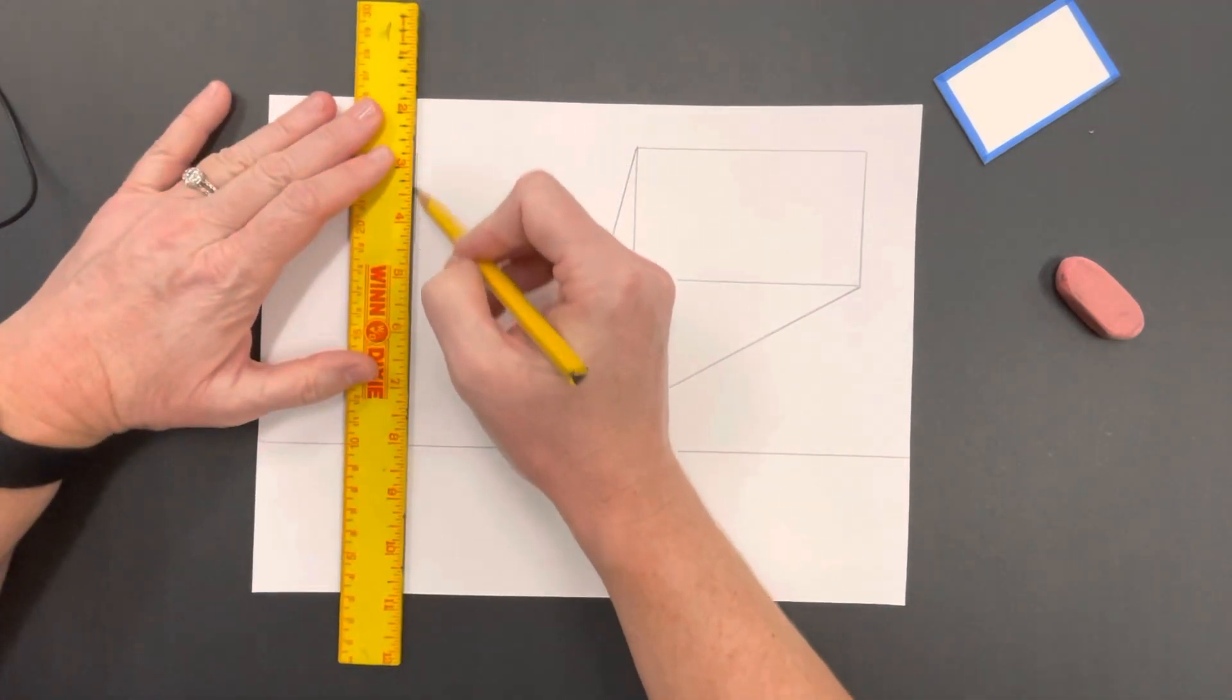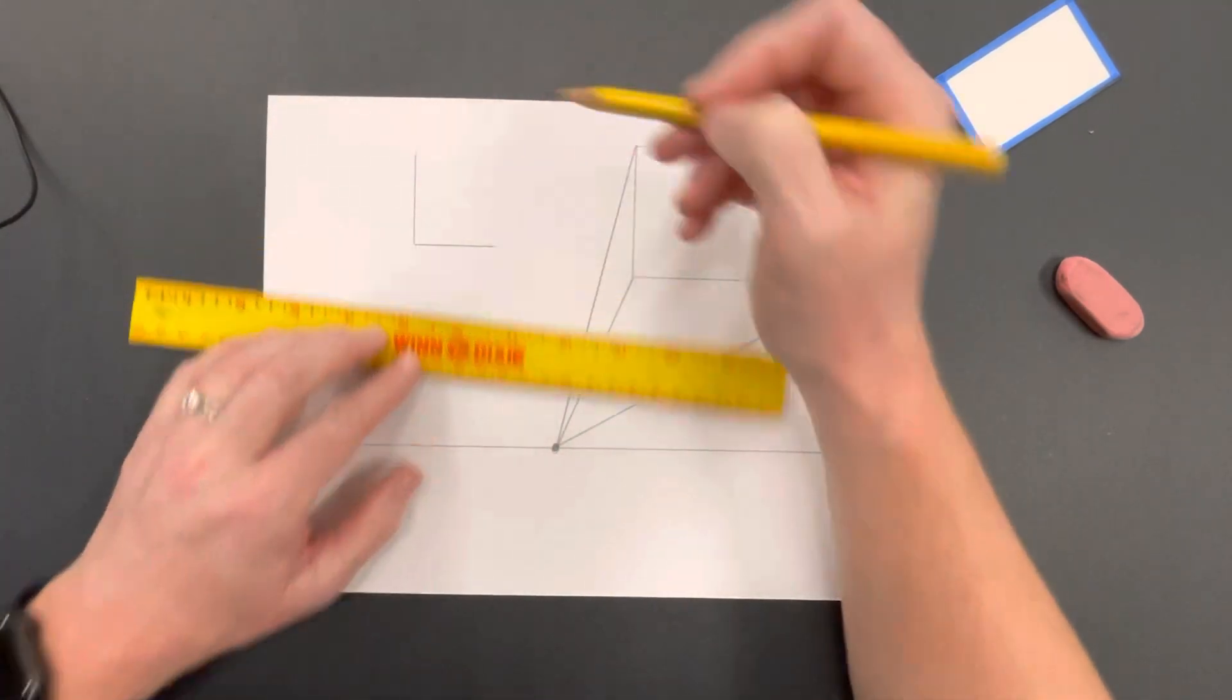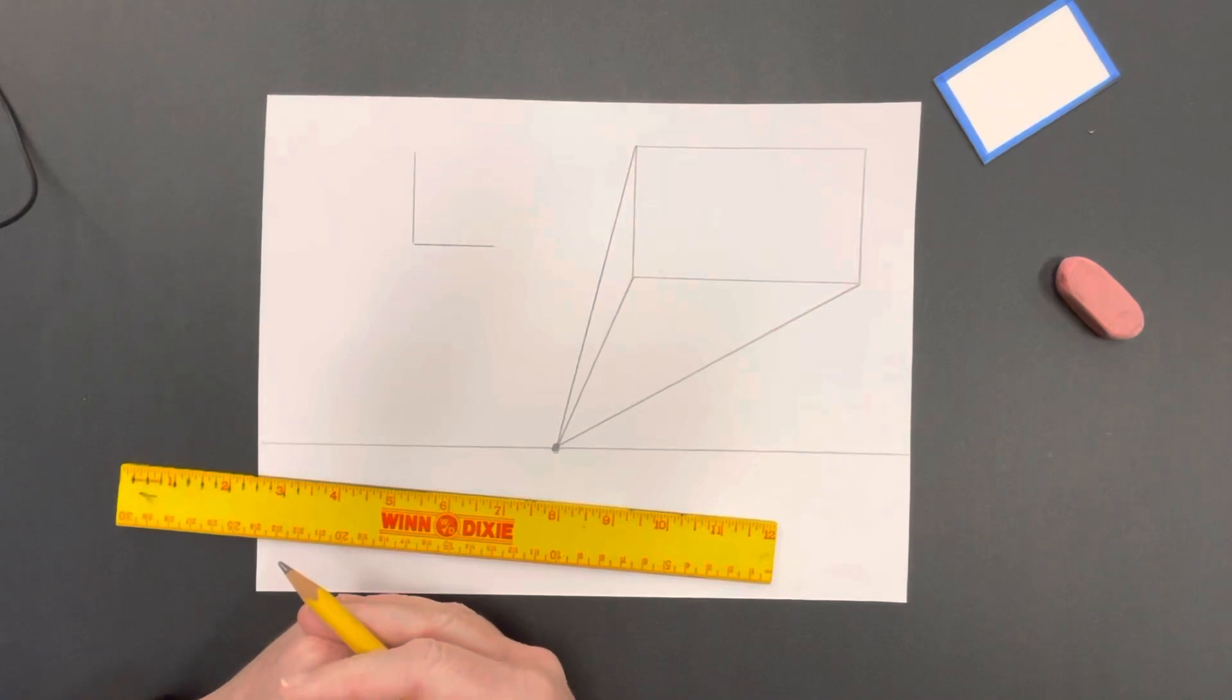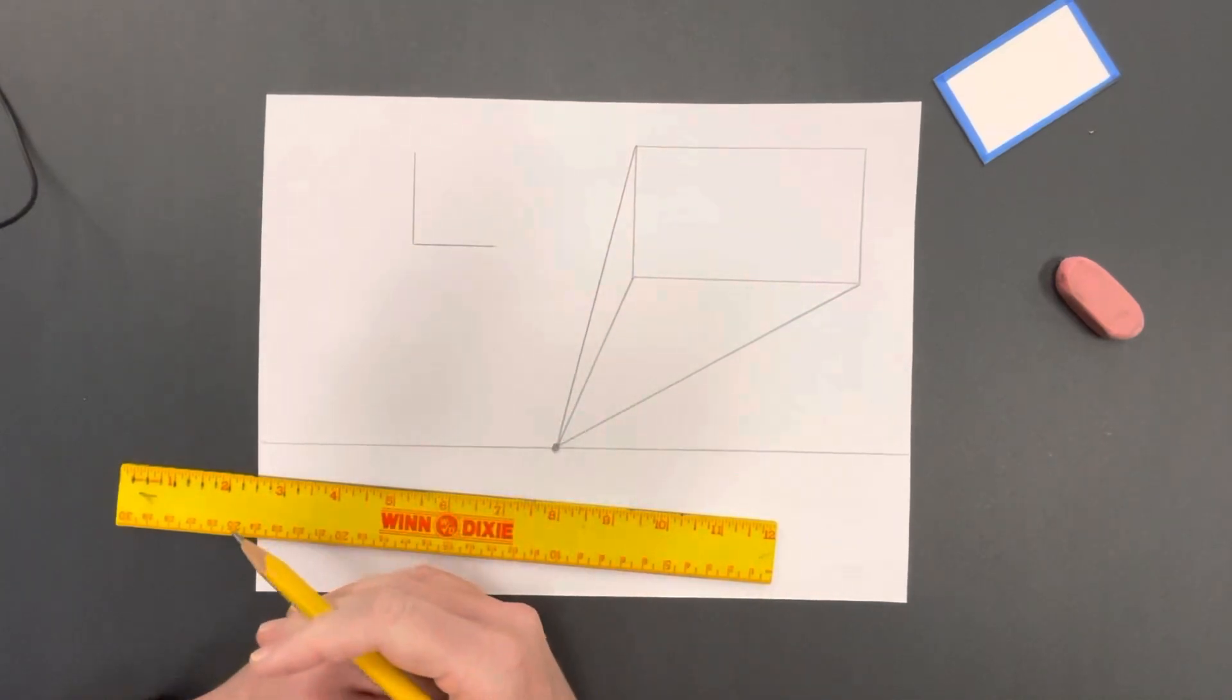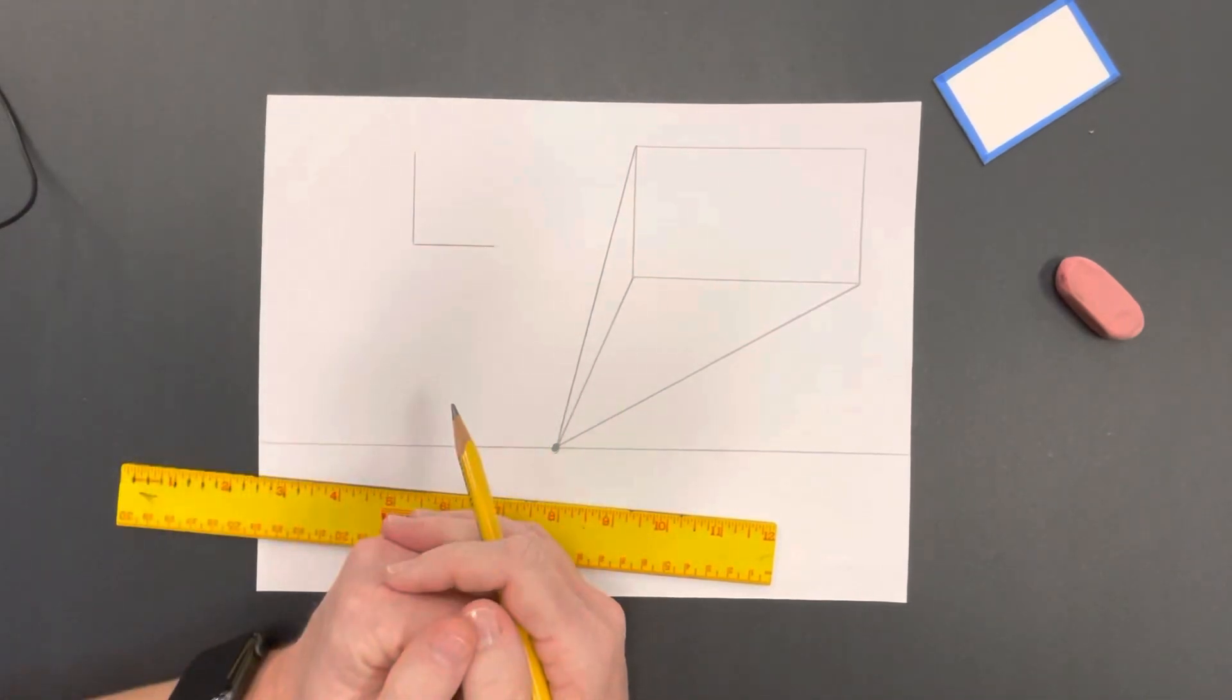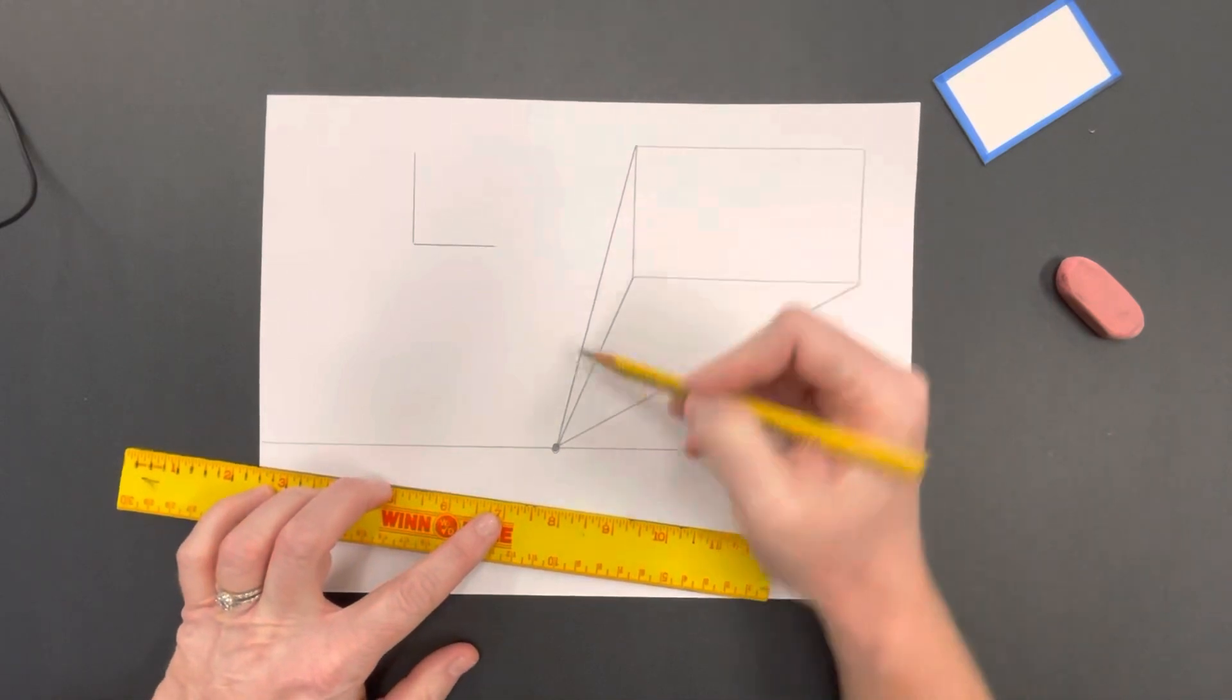A 90-degree angle, which is basically like an L. You've got a vertical line and a horizontal line. So for example, on this one right here...